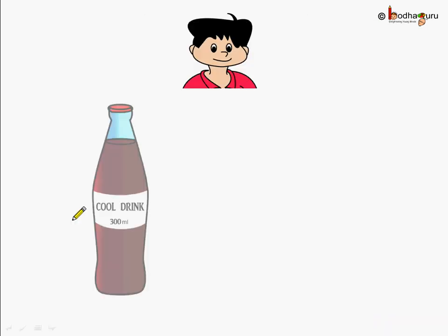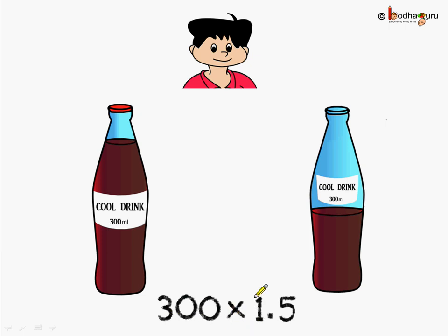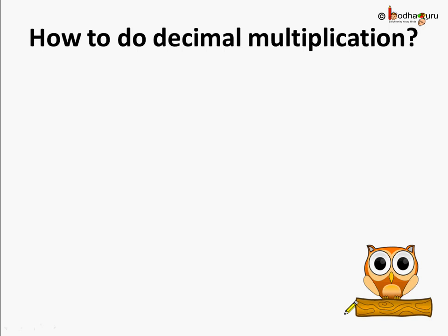Now coming back to our original problem. You had a full bottle — that is 300 milliliter — and you got half a bottle more, that is point five bottle more. So now you have one plus point five, so you have one point five bottles. If we need to find out how much total milliliter you have, one bottle has 300 milliliter, so one point five bottles has how many milliliter? We are going to do multiplication: 300 multiplied by one point five. We said half is nothing but five by ten. So one point five is one plus half. In terms of milliliter, one bottle was 300 milliliter. So the total we have is 300 multiplied by one point five milliliter. And this is what decimal multiplication is.